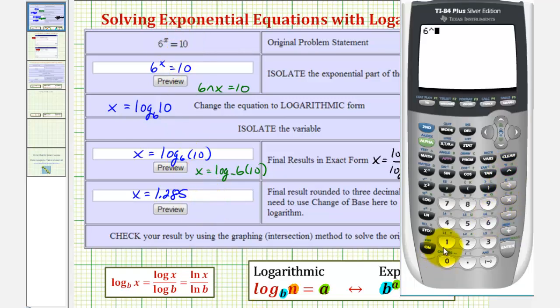So 6^1.285. Notice how this is approximately 10. It's a little bit less because we did round down to get this value here.